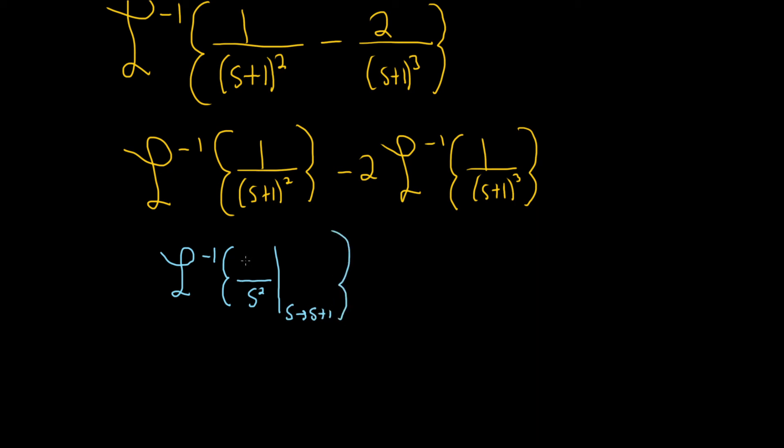And here we want it to be one less factorial, to use our formula. So this is one factorial. One factorial is 1. The formula, by the way, if you haven't seen this before, is if you have the inverse Laplace of n factorial over s to the n plus 1, that's equal to t to the n.